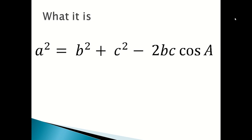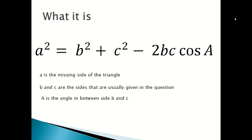So the formula of the cosine rule is A squared equals B squared plus C squared minus 2BC cos A. The small a is the missing side of the triangle. B and C are the sides that are usually given in the question, and the capital A is the angle that is between sides B and C.